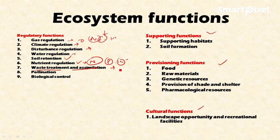Waste treatment and assimilation is another regulatory function. In the ecosystem, we have components called saprophytes — organisms which decompose dead and decayed organic matter and convert it into nutrients for plants, helping them assimilate nutrients for further growth. This is called the waste treatment and assimilatory function.